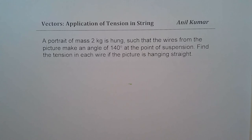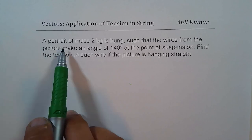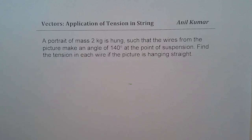The question here is, a portrait of mass 2 kg is hung such that the wires from the picture make an angle of 140 degrees at the point of suspension. Find the tension in each wire if the picture is hanging straight.